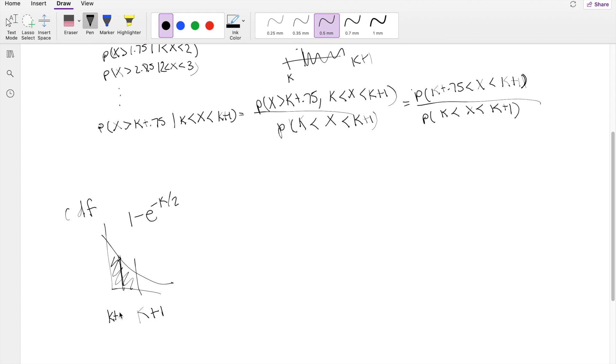If we find the CDF of k plus 1, and we subtract the CDF of k plus 0.75, so let's say we have CDF of k plus 1, and we subtract the k plus 0.75, this part right here, we subtract the blue, then we get exactly what we're looking for, which is this green area right here, the range.